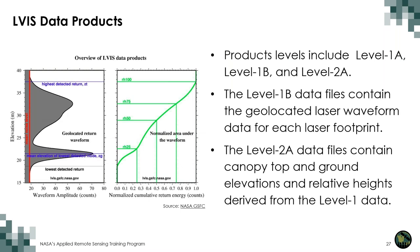LVIS data include Level 1A, Level 1B, and Level 2A products. The Level 1B files contain the geolocated laser waveform data for each laser footprint. The Level 2A data files contain canopy top and ground elevations and relative heights derived from the Level 1 data. These products rely on information contained in the geolocated laser return waveform — the 1B product. Locations of several modes and reflecting points are extracted using signal processing methods and then geolocated, including elevations from the center and lowest and highest modes in the waveform, as well as the highest detected return, such as a canopy top.